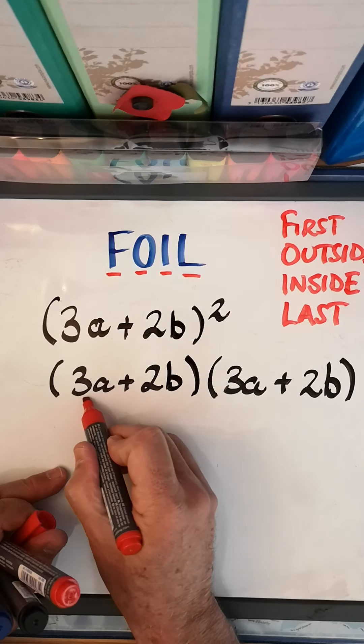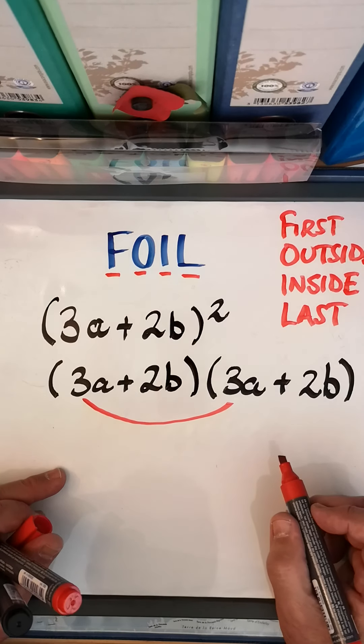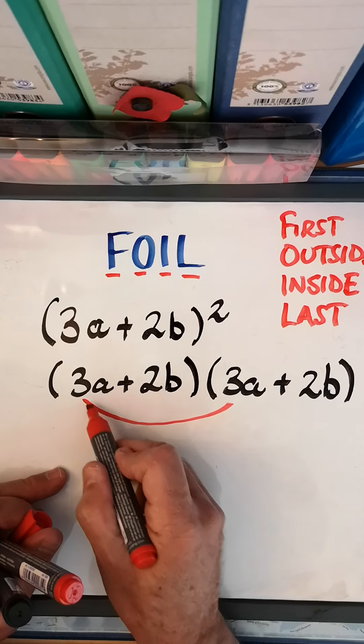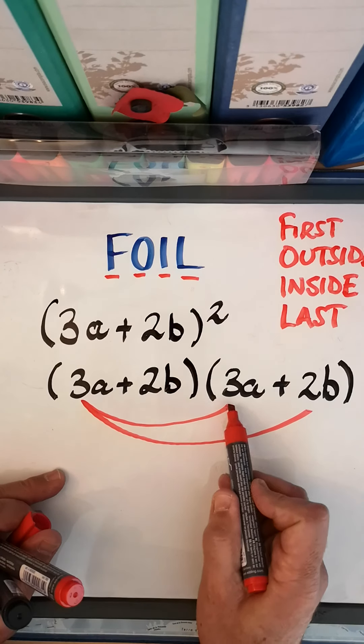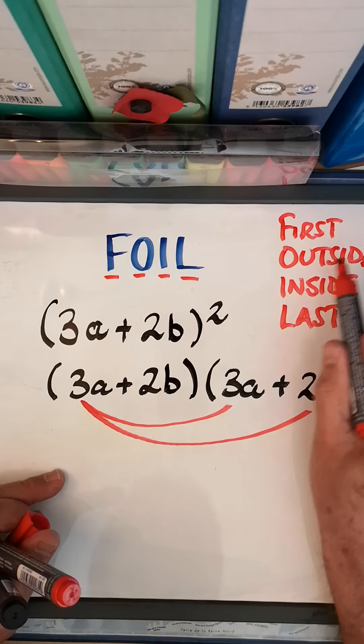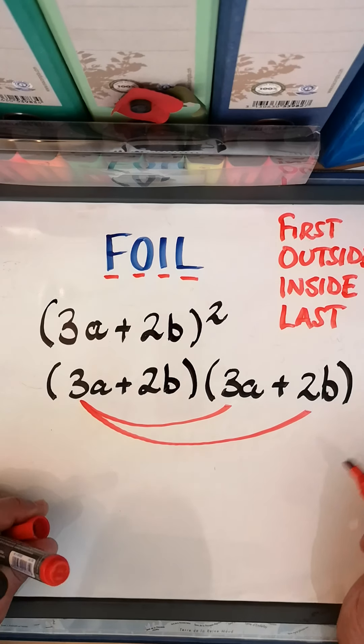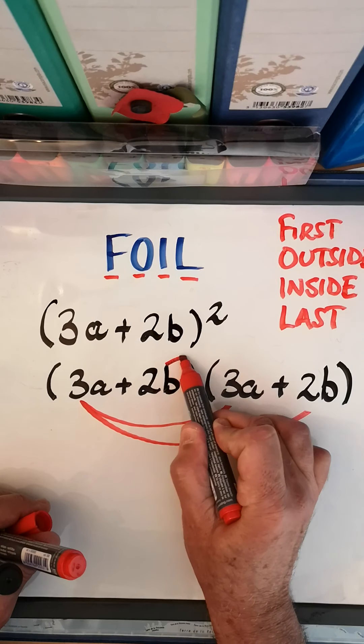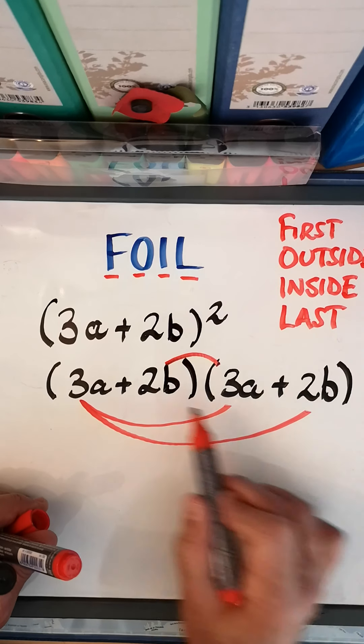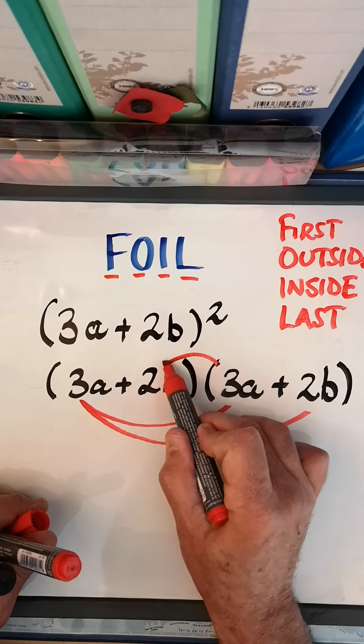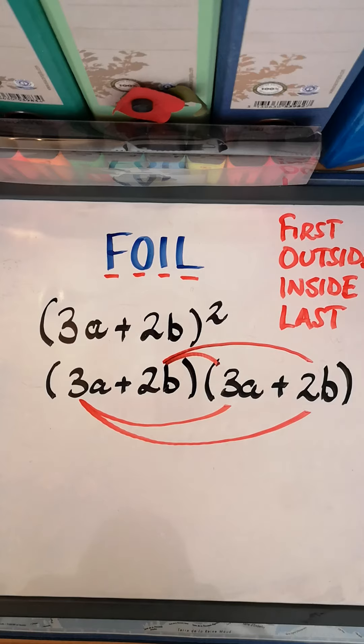Now we employ FOIL. What are the first terms? It's 3a and 3a. Let's match them up so we know we're going to multiply those two. Then the outside ones - there we go, O for the outside ones. Then we have the inside - those are the two inside ones. And L, you've guessed it, last.